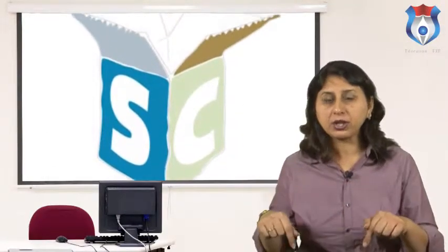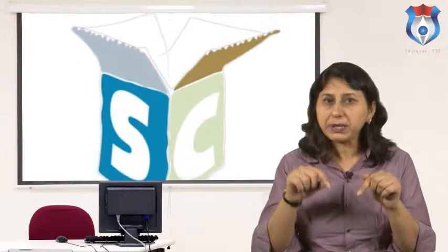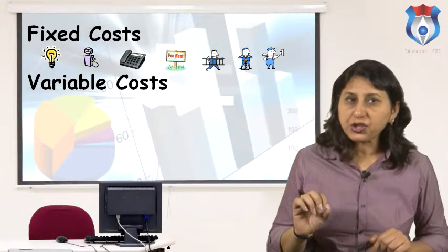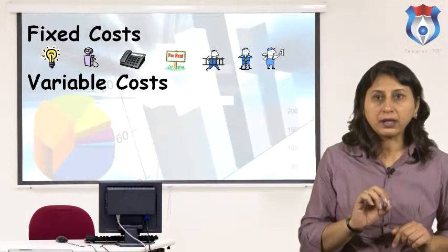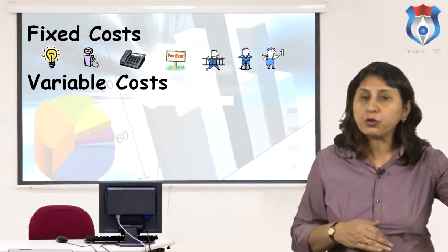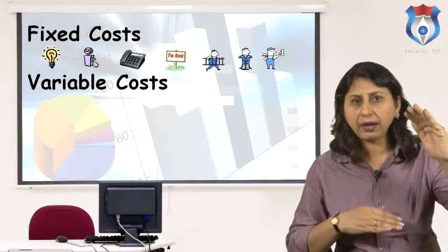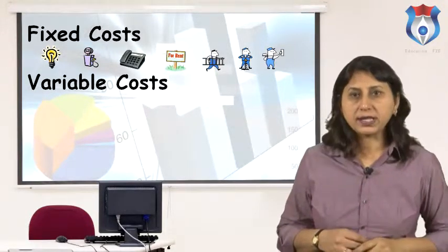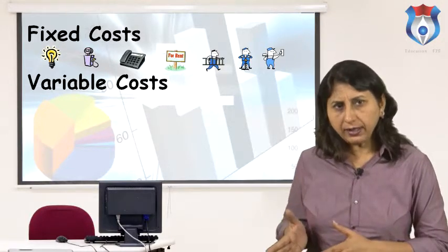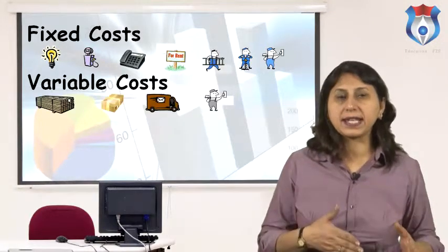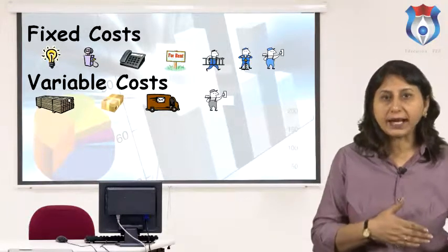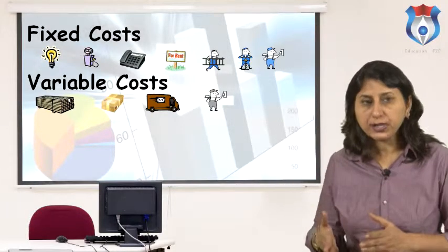Social cost, or external cost, is the cost burden carried by individuals who are not directly involved in the production or consumption of a particular good. Fixed costs: a fixed cost is one which does not vary in total when the level of output by the business varies. Variable costs are those which do vary as a total cost to the organization when output — the number of items or services produced — varies.